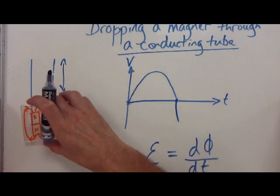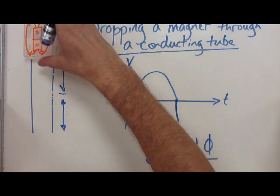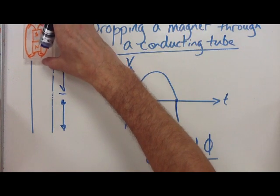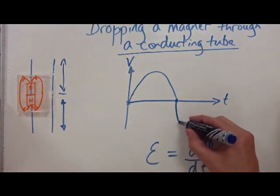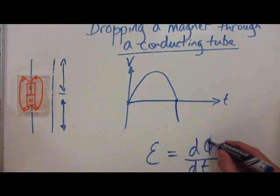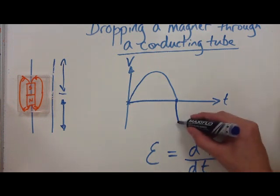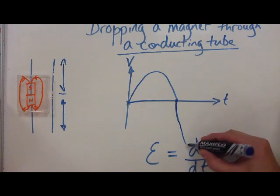Also, because this is dropping — it starts at a velocity of zero and is accelerating — it's cutting through field lines much quicker, which means the EMF is going to be greater, so we get a peak that's much lower down.